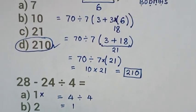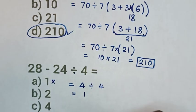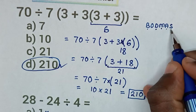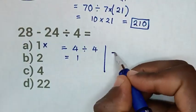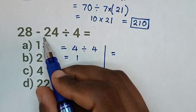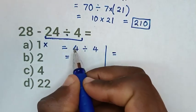If we follow BODMAS rule, in here we have division and subtraction, so we start with division first, then subtraction. When we start with division first, this 24 divided by 4 is 6.